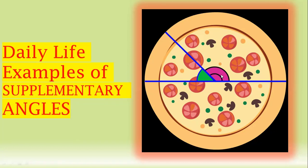When we add this angle and this angle, we can see that it makes one whole straight line that represents an angle of 180 degrees. So we can see that these three pieces of pizza and this one piece of pizza represent supplementary angles.